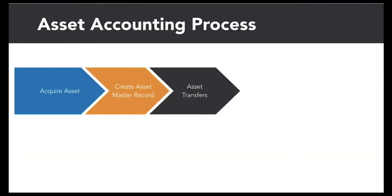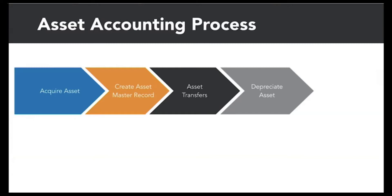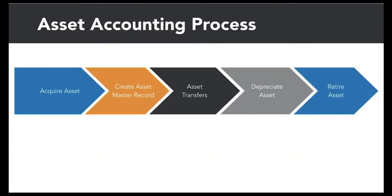An asset can be transferred from one company code to another. The next step is depreciation of the asset. The cost of using an asset — for example, the wear and tear — is called depreciation. Depreciation is accounted at the end of each accounting period. Each type of asset depreciates differently according to its nature. In SAP, all of this information is kept in the chart of depreciation. Assets can be automatically depreciated after each accounting period, or it can be done manually. The final step is the retirement of the asset, which is the removal of an asset from the asset portfolio.